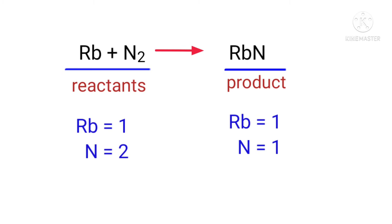If you look at this equation, the equation is not balanced. In the reactants side, there are 1 rubidium atom and 2 nitrogen atoms, and on the product side there are 1 rubidium atom and 1 nitrogen atom. The number of atoms are not balanced on both sides.